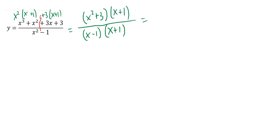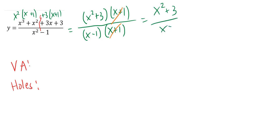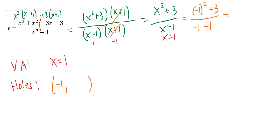Once it's all factored, I think about vertical asymptotes and holes. Vertical asymptotes come from things that don't cancel — x plus 1 cancels out. My vertical asymptote is x equals 1 because that did not cancel. Originally my excluded values were 1 and negative 1. Negative 1 canceled, so that will be a hole; 1 did not, so that is a vertical asymptote. My hole is negative 1 comma whatever I get plugging negative 1 in: negative 1 squared plus 3 over negative 1 minus 1 equals 1 plus 3 over negative 2, which is 4 over negative 2, giving negative 2. I have a vertical asymptote at x equals 1 and a hole at the point negative 1 comma negative 2.